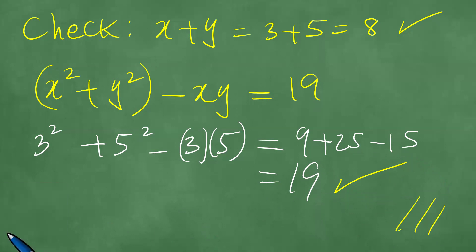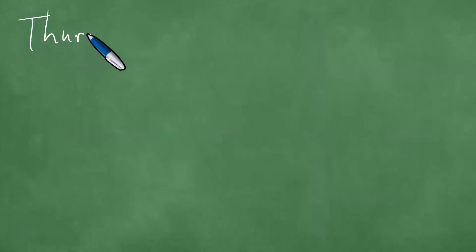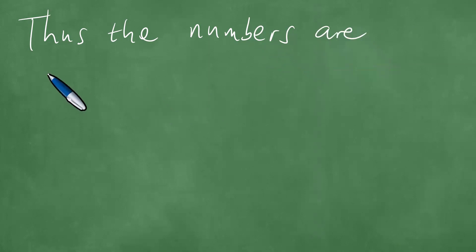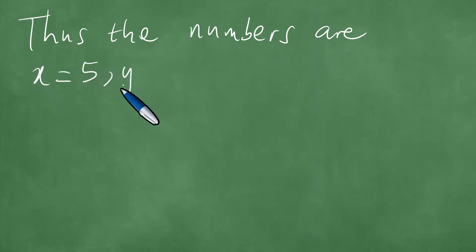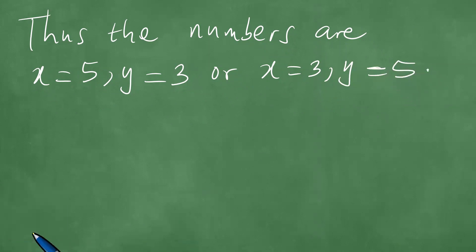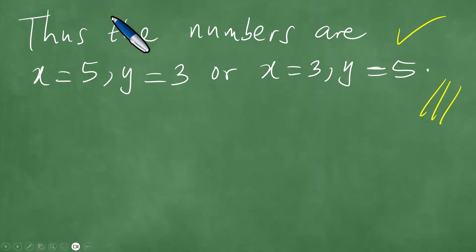We conclude as follows: the numbers are x equals 5, y equals 3, or x equals 3, y equals 5. These are the answers to the problem. We have solved this in a step-by-step manner. Thanks everybody for watching.